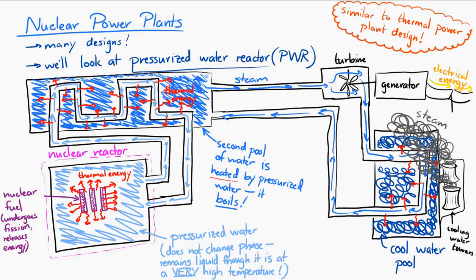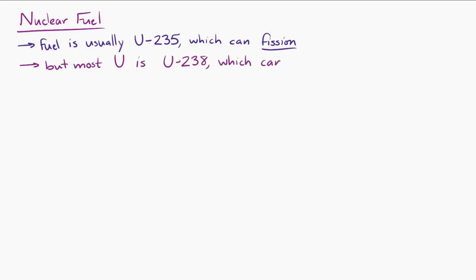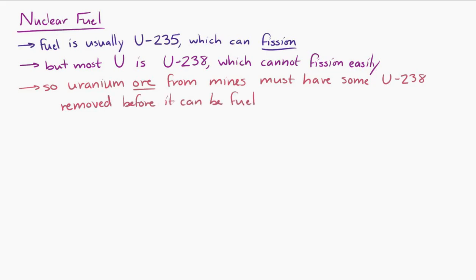Now, let's look a little bit more at the nuclear fuel. Inside the nuclear reactor, that nuclear fuel is usually uranium-235. Uranium-235 can undergo fission. However, most uranium in the world is uranium-238, a different isotope of uranium. And uranium-238 cannot easily fission. So the ore, the material that you actually dig up from the ground, must have the uranium-238 removed before it can be used as fuel. This process of removing the uranium-238 and increasing the concentration of uranium-235 is called enrichment.